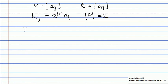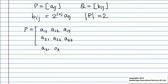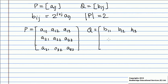Let us assume P as a 3×3 matrix whose terms are a11, a12, a13, a21, a22, a23, a31, a32, and a33. And Q be a 3×3 matrix whose terms are b11, b12, b13, b21, b22, b23, b31.